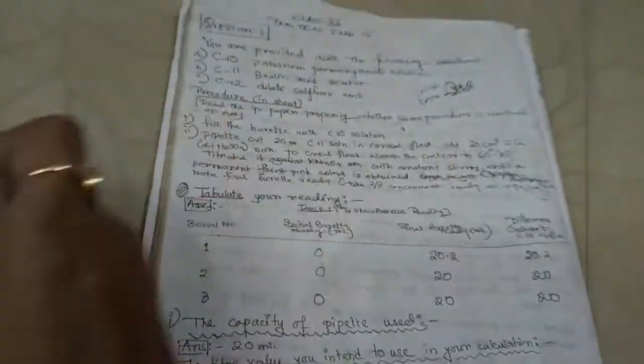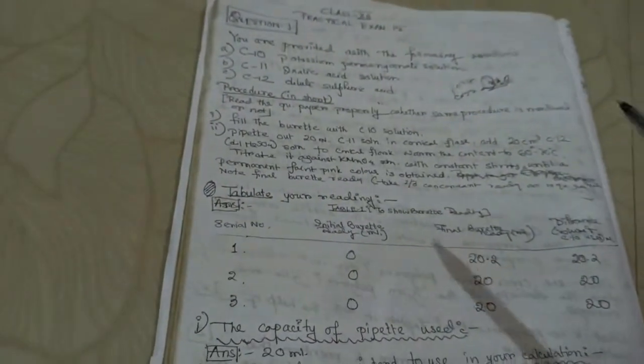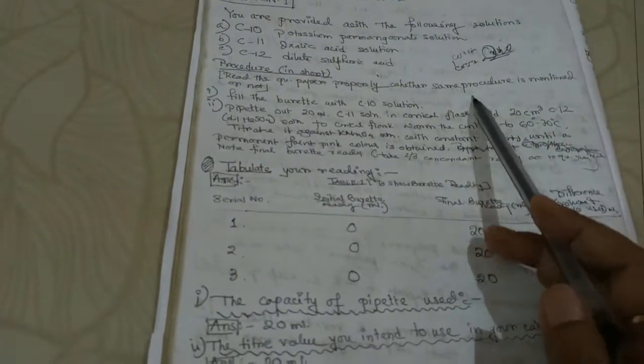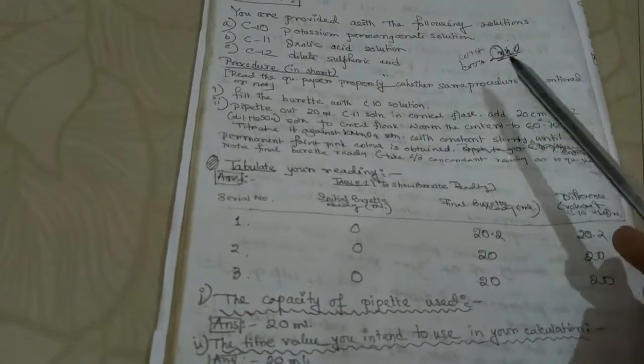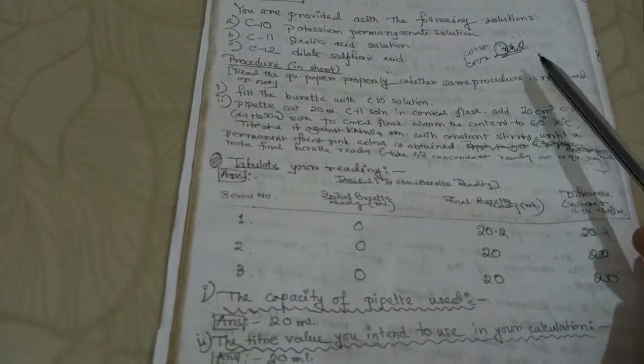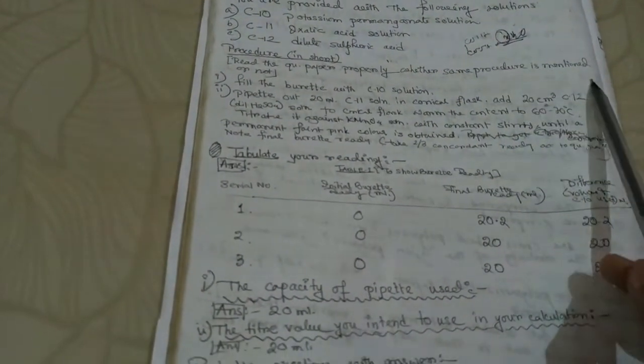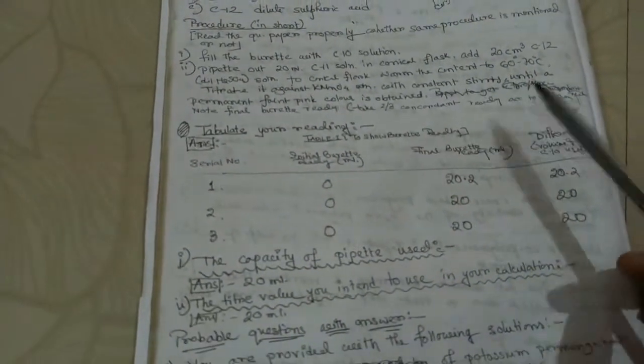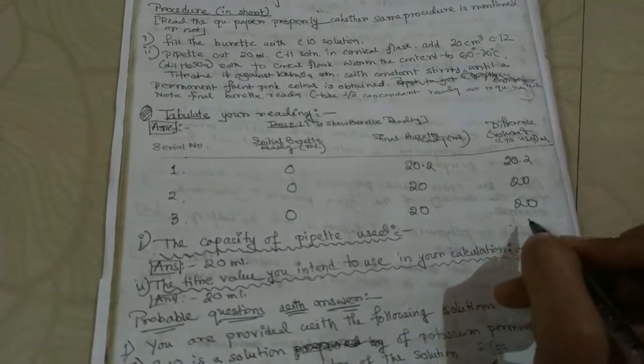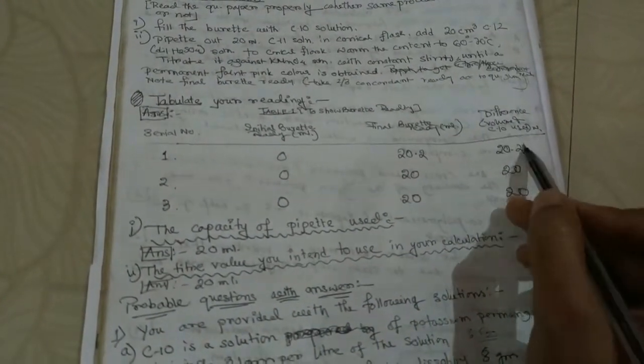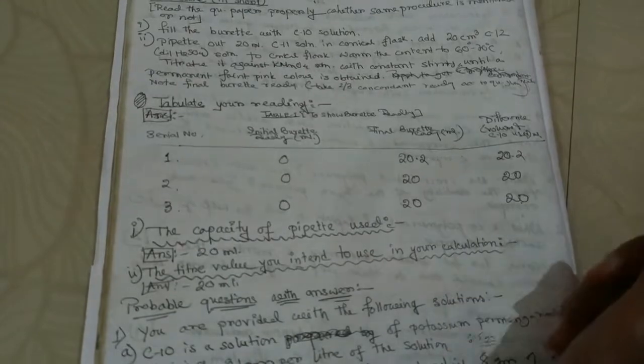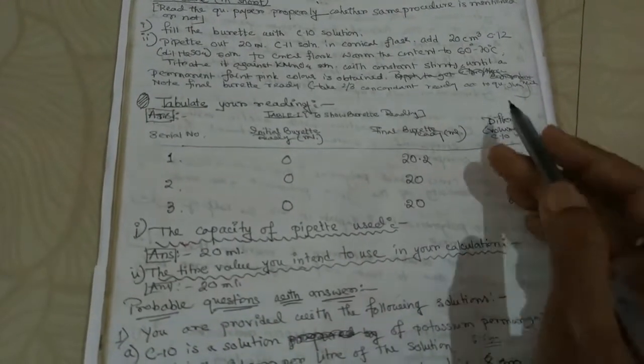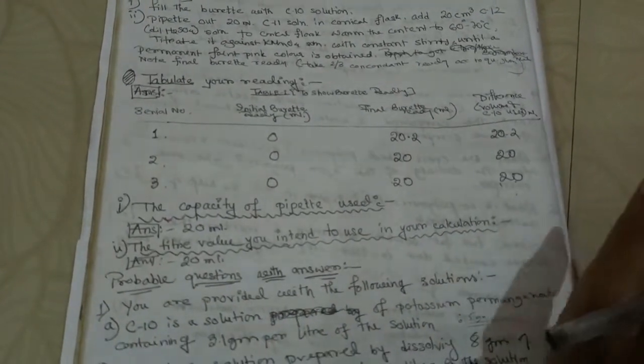For that you need to have first calculation because molecular weight initially you cannot calculate as it is XH₂O. So you need to find out the strength from the burette reading. Now you can consider the burette reading that has come during the practical or you can use these data as well: 20.2, 20, 20, 20. These data also you can use or previous data, anything you can use. If you are using these data then calculations will be accordingly.